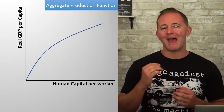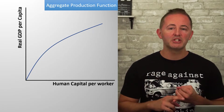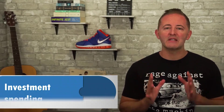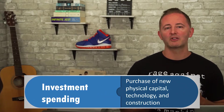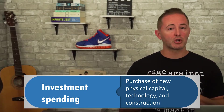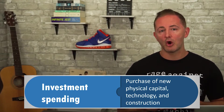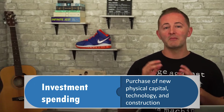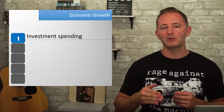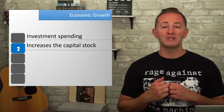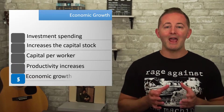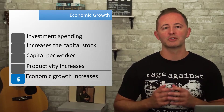Productivity also increases as a result of improvements in education, training, and the skills of workers. Investment spending is the single biggest factor in increasing the amount of physical capital we have, so we can go straight from investment spending to economic growth: investment spending increases the capital stock, which increases the amount of capital per worker, increasing productivity, and economic growth occurs as a result.